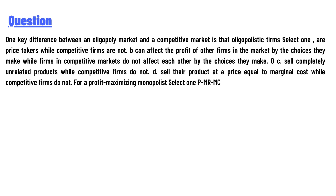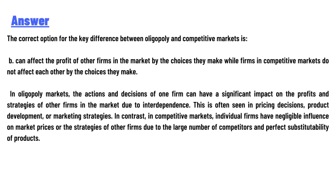The correct answer is option B. The key difference between oligopoly and competitive market is that firms can affect the profit of other firms in the market by the choices they make, while firms in competitive markets do not affect each other. In oligopoly markets, the actions and decisions of one firm can have significant impact on the profits and strategies of other firms due to interdependence. This is often seen in pricing decisions, product development, or marketing strategies.